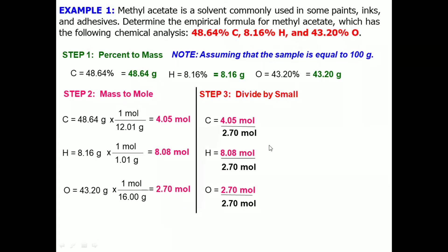And the answer for carbon is 1.5, hydrogen 3, then oxygen 1. You have to remember that we want whole number ratios. However, the result of carbon is 1.5, so therefore we need to proceed to the next step.